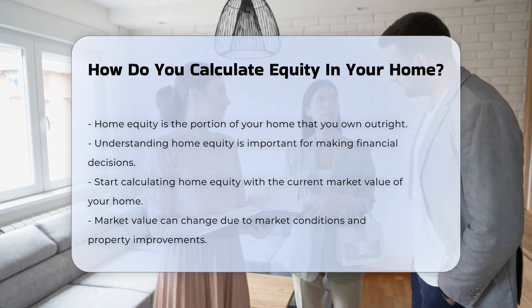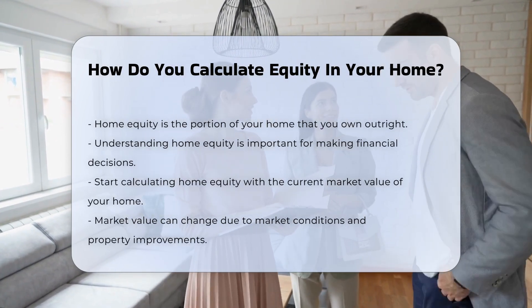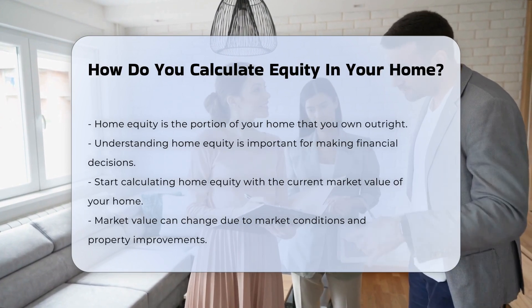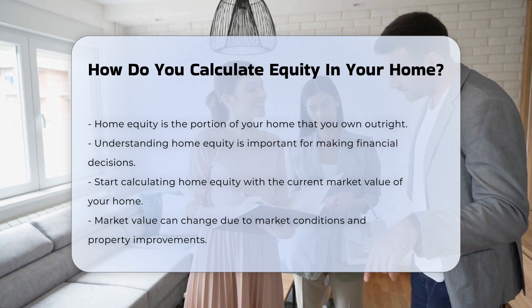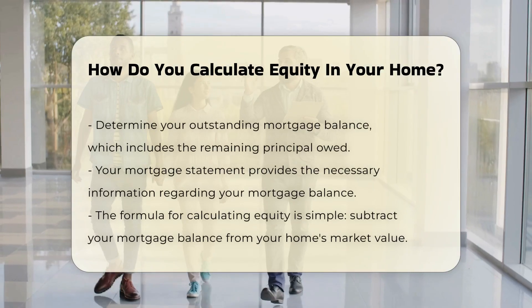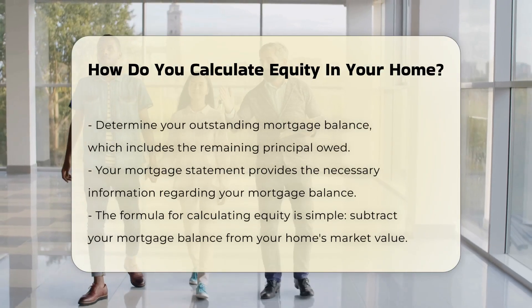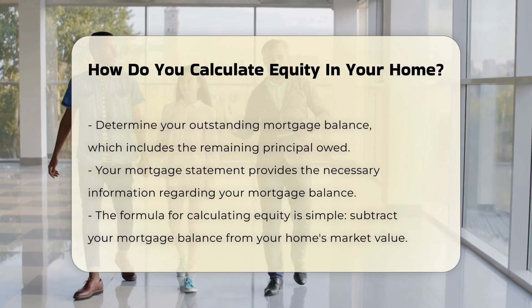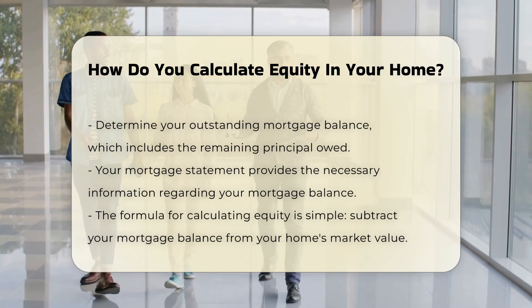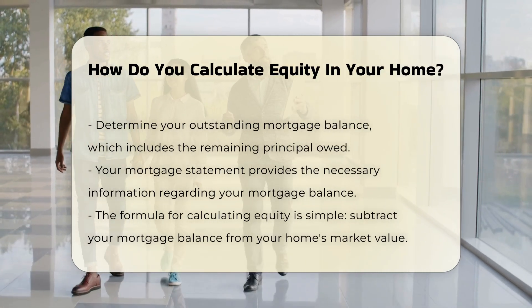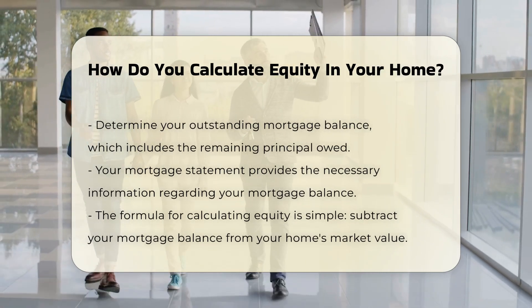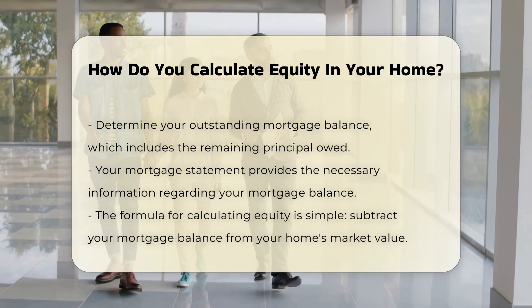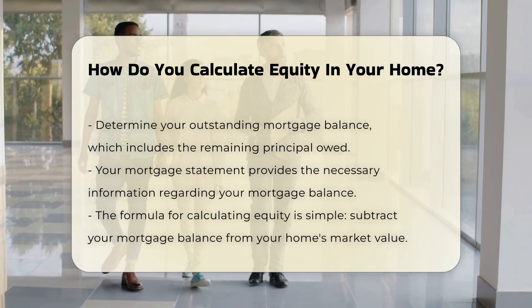To determine home equity, you start with the current market value of your home. This value can fluctuate based on market conditions and property improvements. Next, you need to know your outstanding mortgage balance, which includes any remaining principal owed on your loan. Your mortgage statement can provide this information.